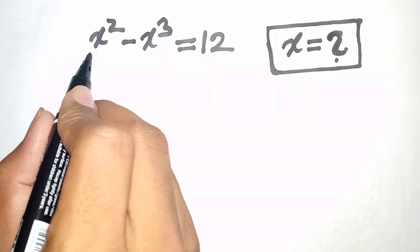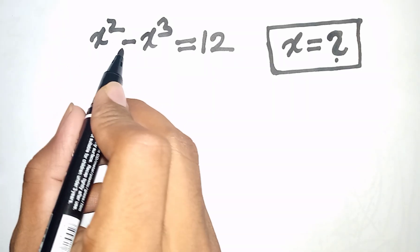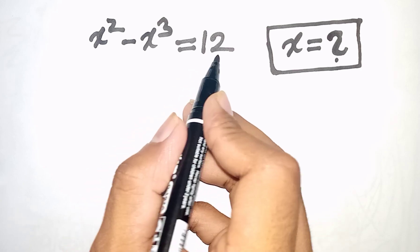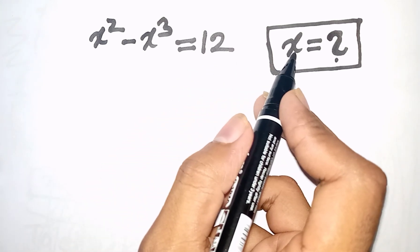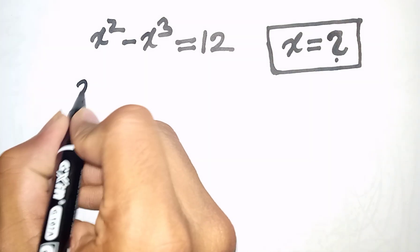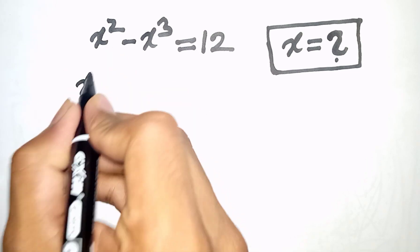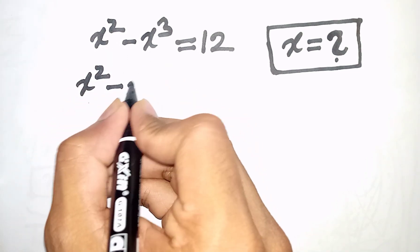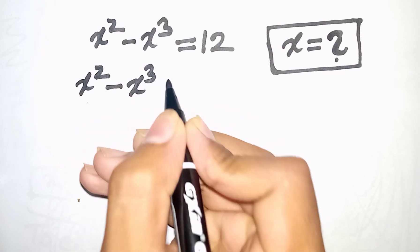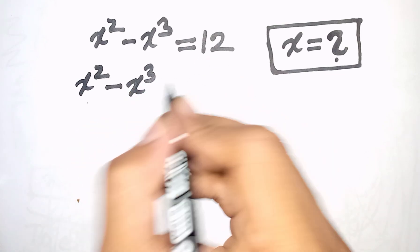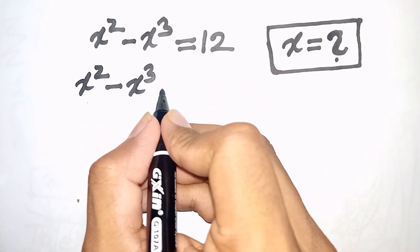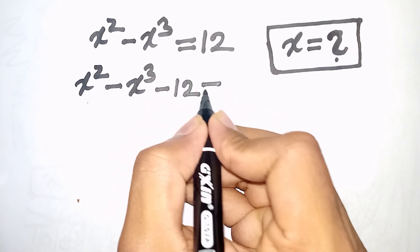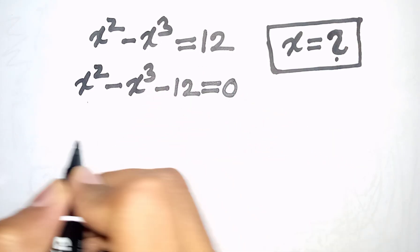How to solve x² - x³ = 12. Find the value of x. We have x² - x³ + 12, take 12 to the left side, so this will be x² - x³ - 12 = 0.